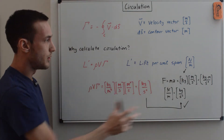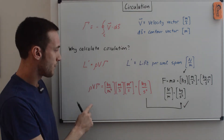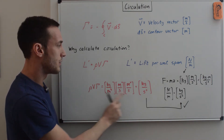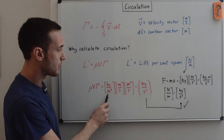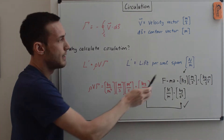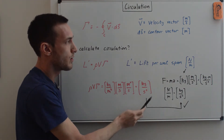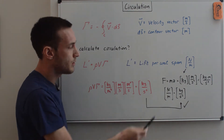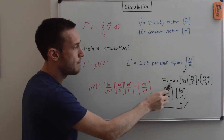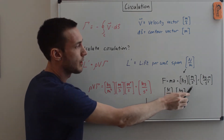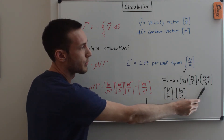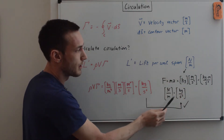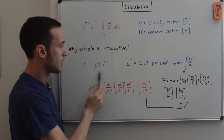Let's check that all the units make sense. Density is in kilograms per meter cubed, velocity is in meters per second, and circulation is meters squared per second. The meters cubed on top cancels with the meters cubed on the bottom, giving kilograms per second squared. For newtons per meter: from F = ma, a newton is kilogram meters per second squared, so newtons per meter is kilograms per second squared — which checks out with the right-hand side.